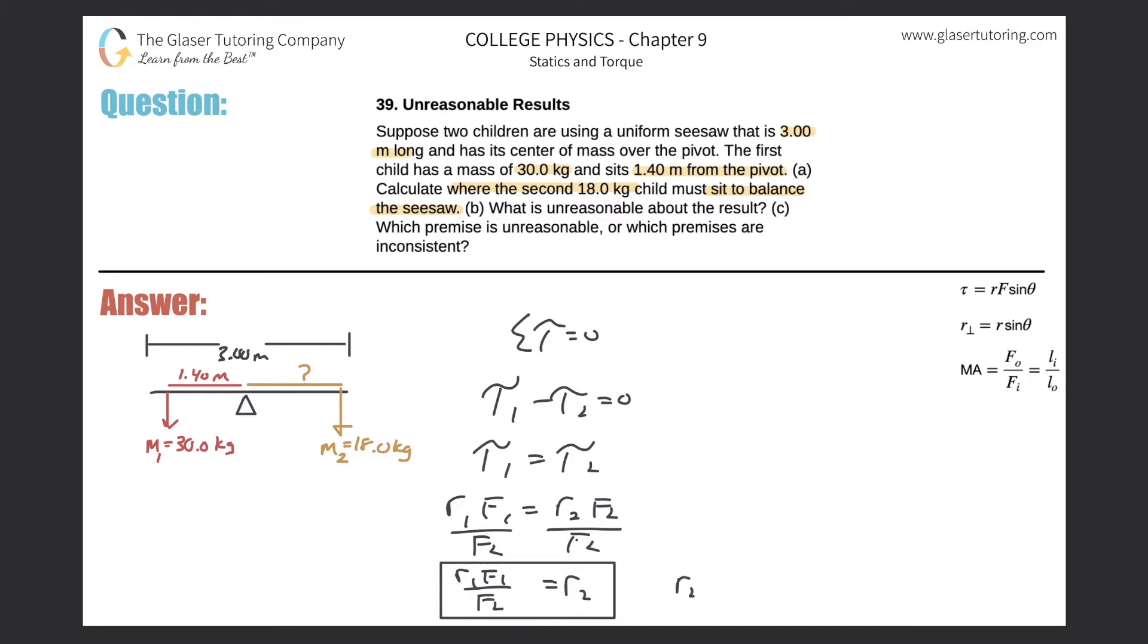Now let's just plug in the values. So here we have R2 is equal to 1.4 multiplied by the weight which is 30 kilograms multiplied by 9.8 all divided by the force of child two which would be the 18 kilograms multiplied by 9.8. Obviously you can simplify it by canceling the 9.8s but it doesn't really matter. Just calculate it. So 1.4 times 30 divided by 18 and you'll notice what do we get? 2.3.